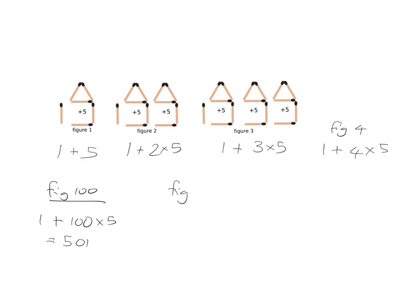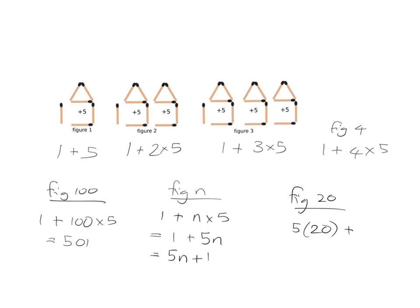Now what we want is a general formula. We want to say for any number, how will we work out the number of matches? Well it will be 1 plus n lots of 5. Because if we had figure 2 it will be 1 plus 2 lots of 5; for figure 3, 1 plus 3 lots of 5; for figure 100, 1 plus 100 lots of 5. So for figure n it will be 1 plus n lots of 5. And then just to write that nicely in algebra — we write n times 5 as 5n — more conventionally we'd write it as 5n plus 1. So this formula can easily help us: if we wanted to know how many matches in figure 20, we would say it is 5 times 20 plus 1, which is 101.